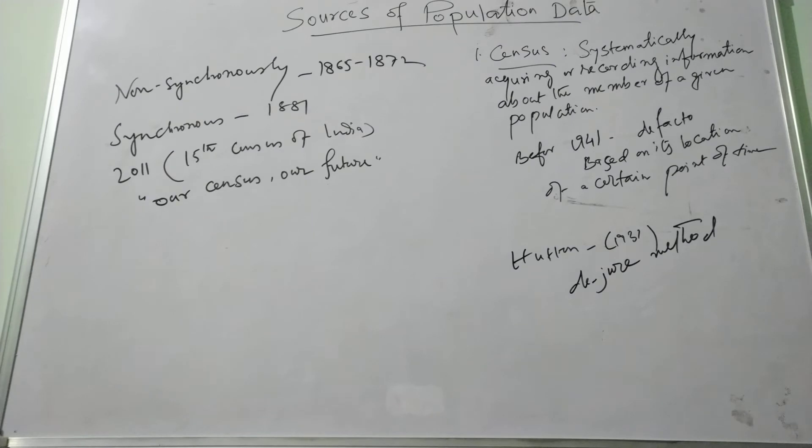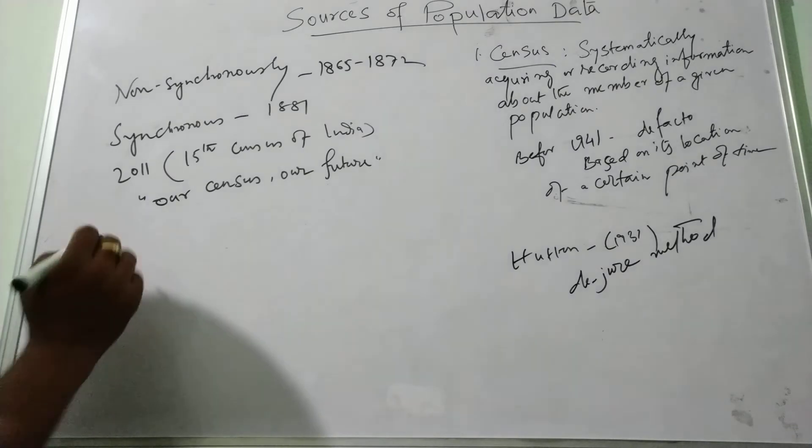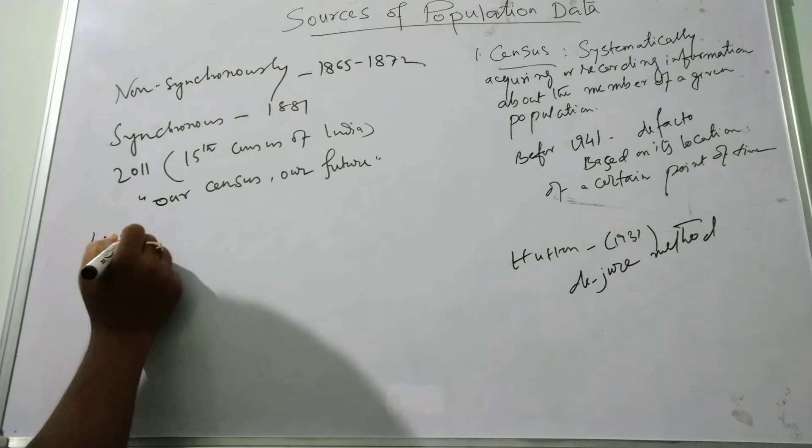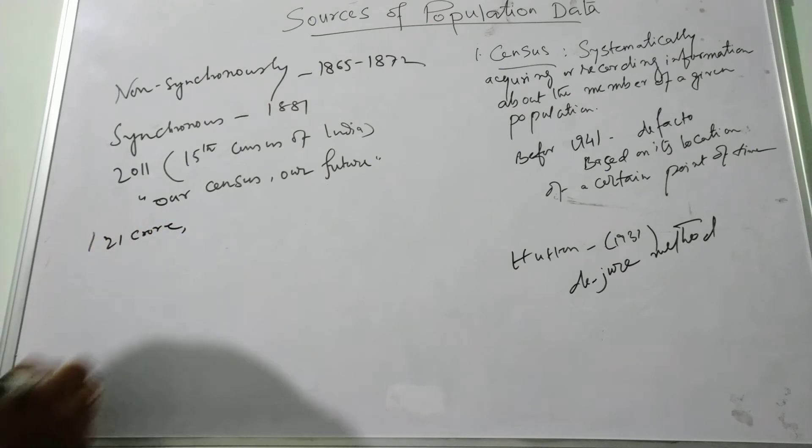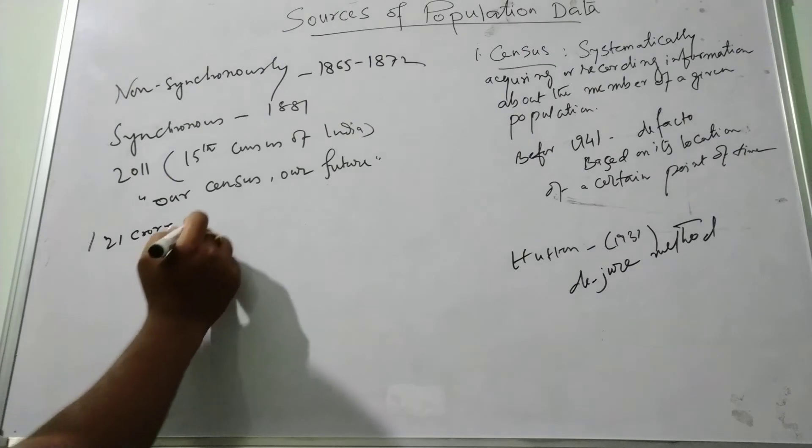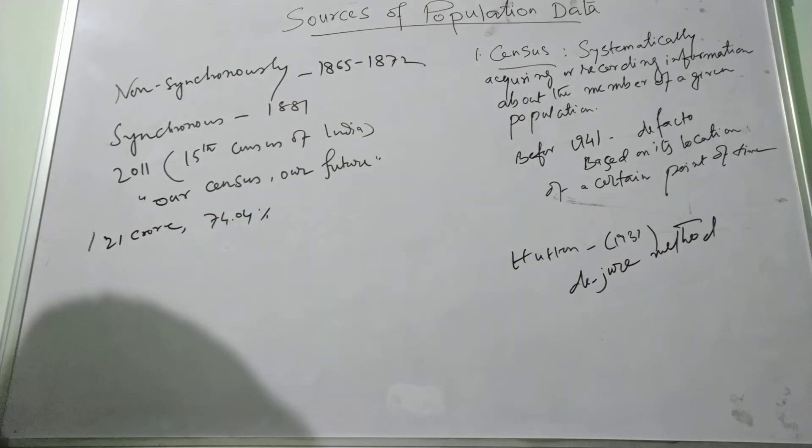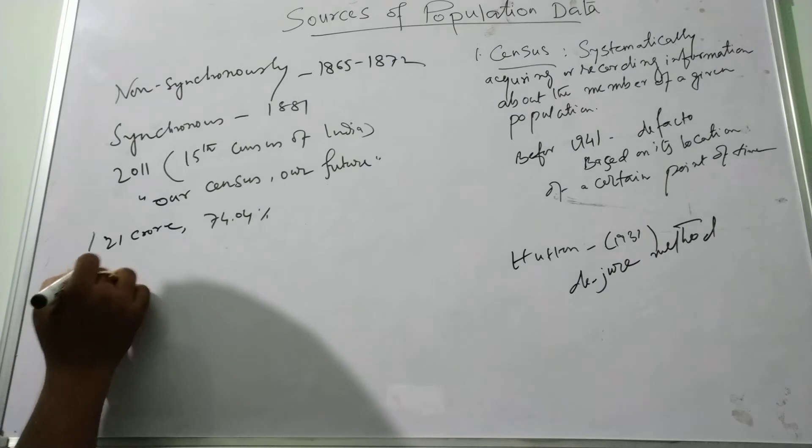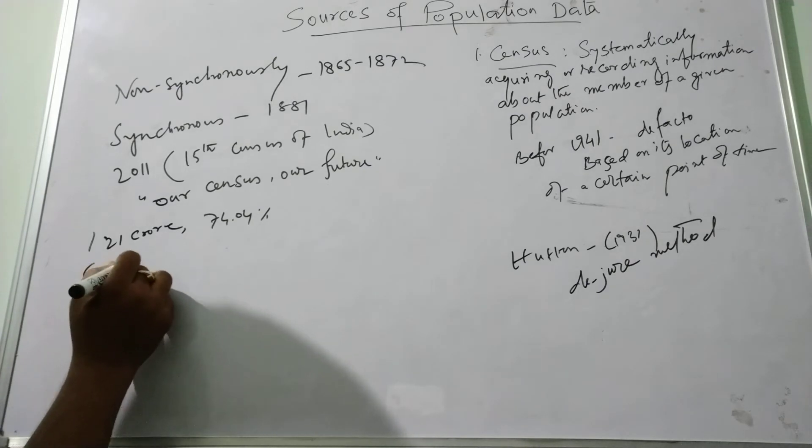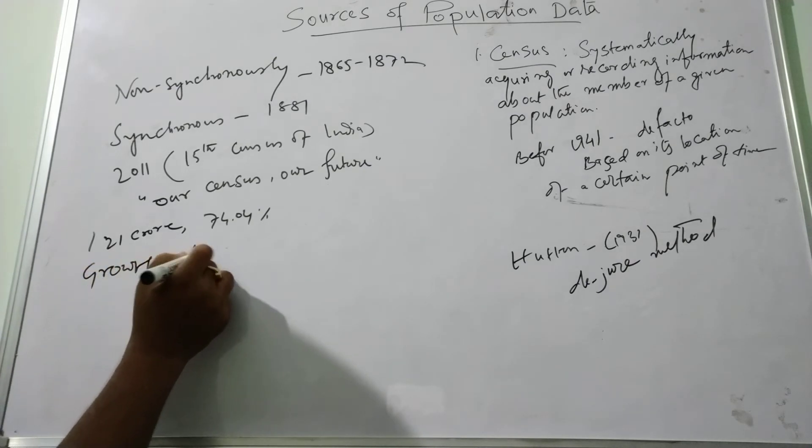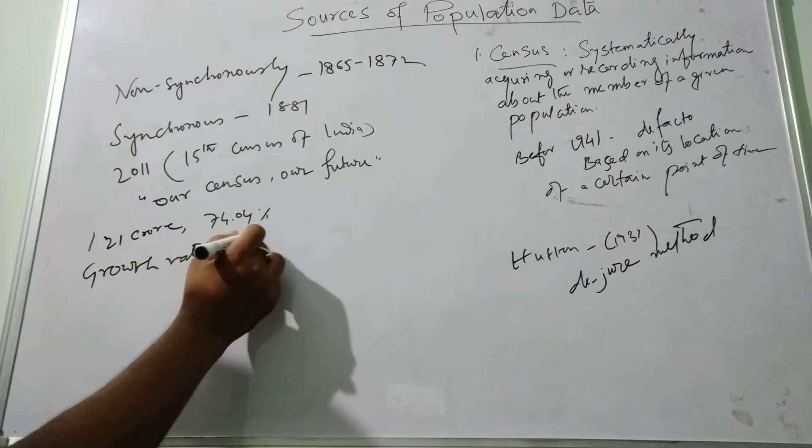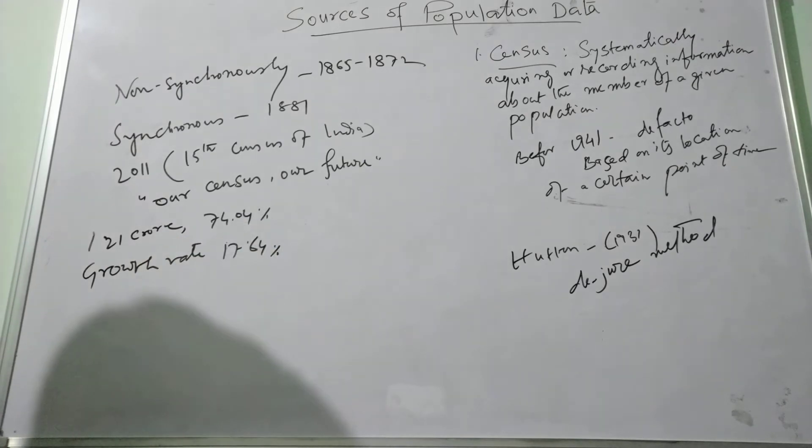As per the 2011 census, the Indian population was 121 crore with a literacy rate of 74.04% and the growth rate of population was 17.64%.